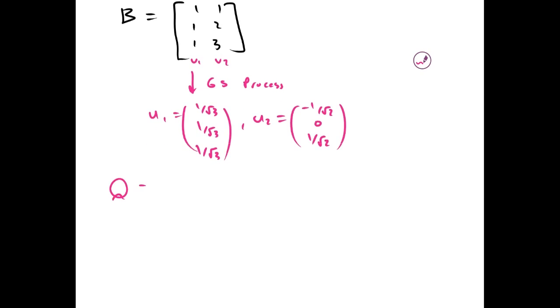This gives us a Q that is 1 over root 3, 1 over root 3, 1 over root 3.